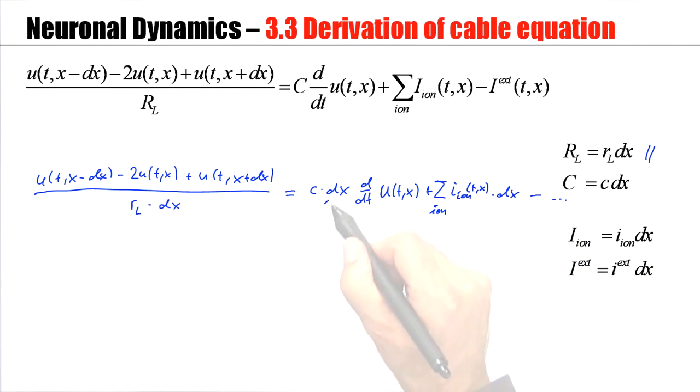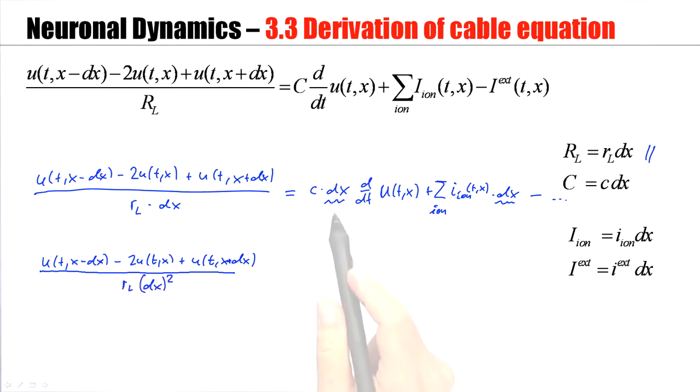Now I see that in each term on the right-hand side I have the dx which I can bring over to the other side. So again, the numerator u(x-dx) minus 2u(x) plus u(x+dx). Now in the denominator I have the dx squared because I brought this dx to the other side. I divide it by dx. On the right-hand side I now have the little c d/dt u plus sum of all ion types and all ion channel types, i_ion(t,x). The dx has gone and I copy the external current i_external(t,x).